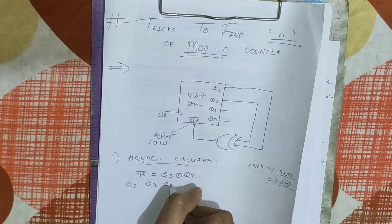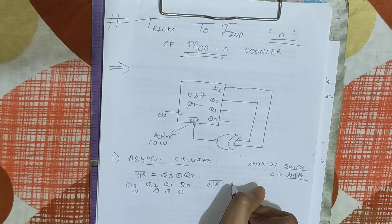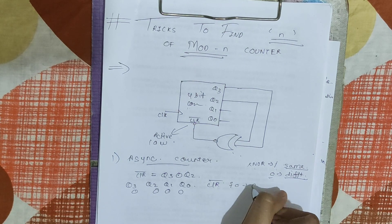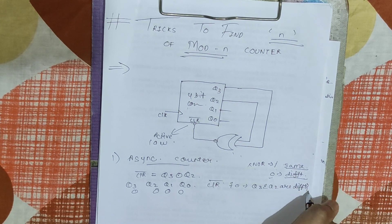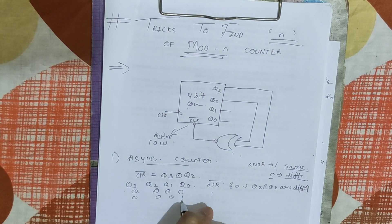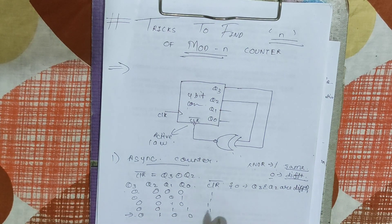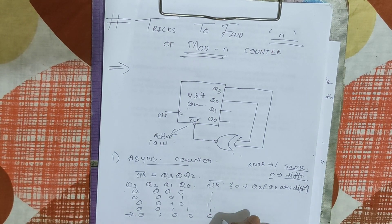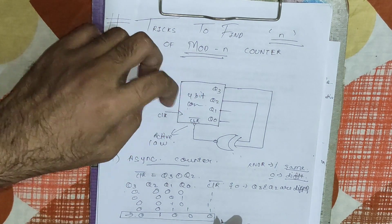When we start counting: Q3 Q2 Q1 Q0 = 0000. Clear-bar will be zero when Q3 and Q2 are different. In the first state Q3 and Q2 are the same, so clear-bar is 1. Counting continues: 0001, 0010, 0011, 0100. At state 0100, Q3 and Q2 are different, so clear-bar is activated and becomes zero. This state won't be counted and the counter resets to 0000.